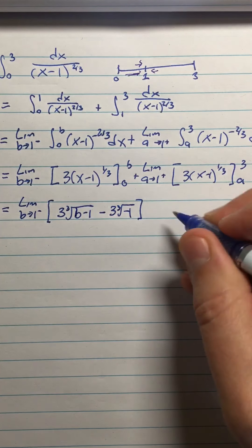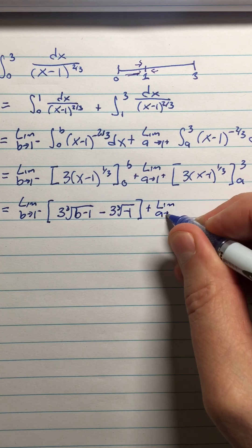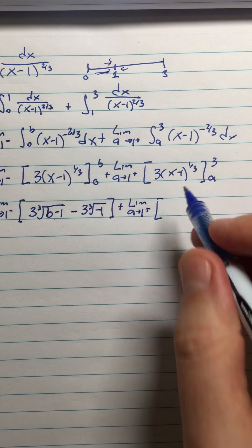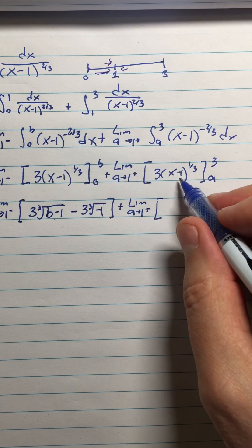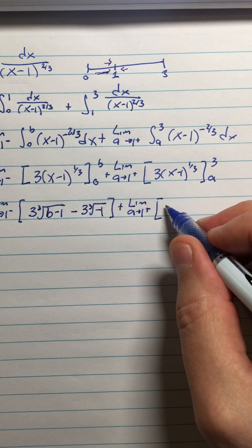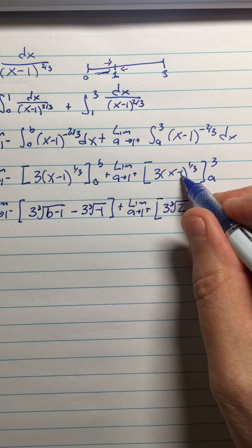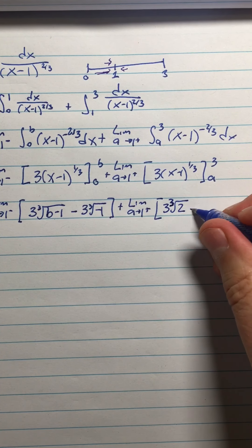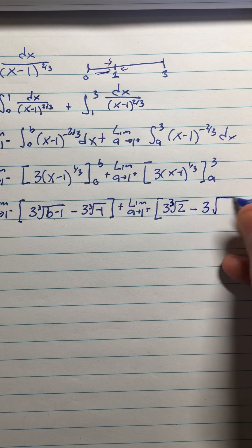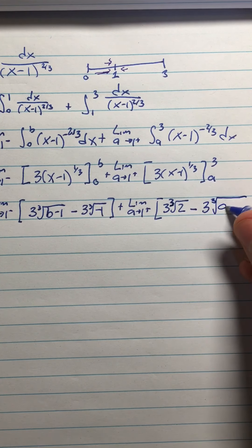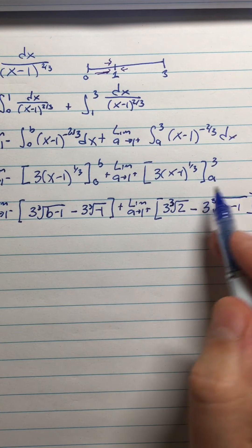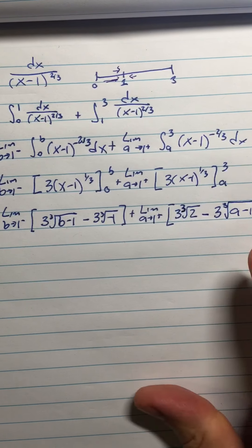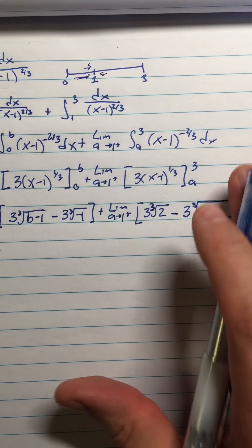This is a b, right? And then plus limit as a approaches 1 from the right of... Now we'll plug in these values. So this time the 3 comes first. So I'm going to have 3 times the cube root of 2. All right, that's just plugging in the 3. And 3 minus 1 is 2, so cube root of 2. And then minus 3 times the cube root of (a-1). So remembering to put the 3 and then the a, right? We're always putting the upper limit first and the lower limit second.